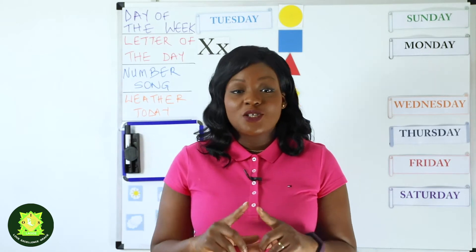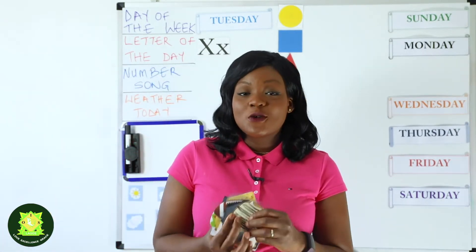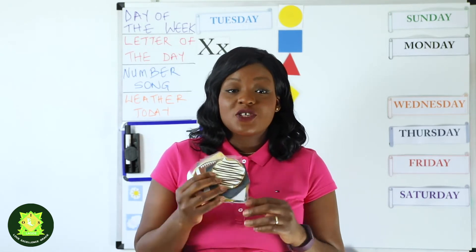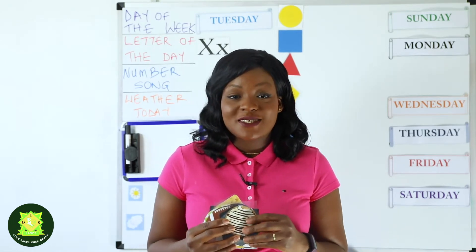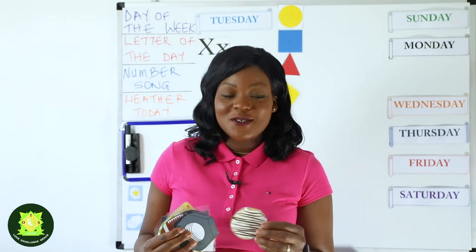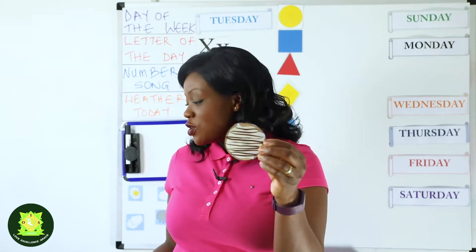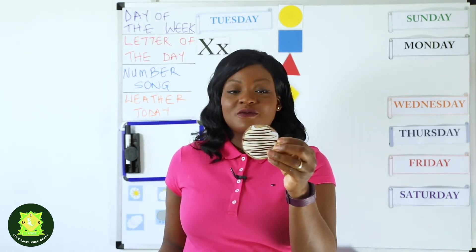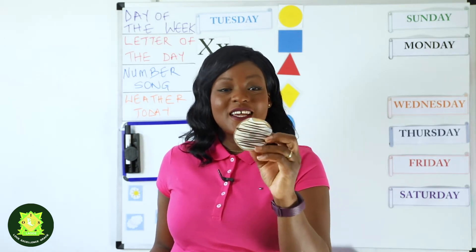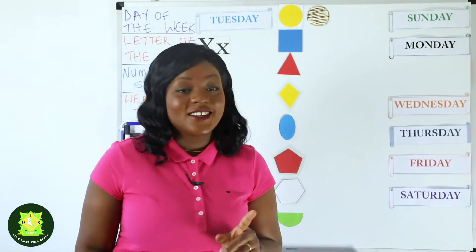So I have some pictures over here. I need you to help me sort this out and tell me the name of the shape of each object. Are you ready? So first I have a donut. What shape does this remind you of? The donut is a circle. So let's put it right next to the circle. Good job everyone.